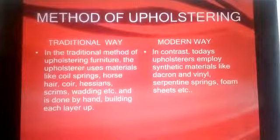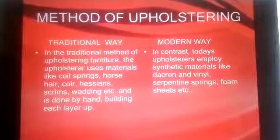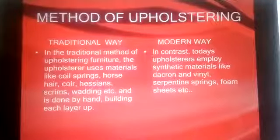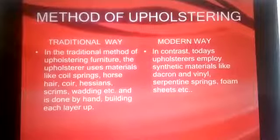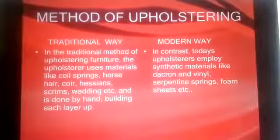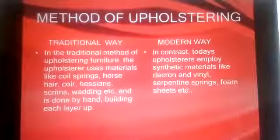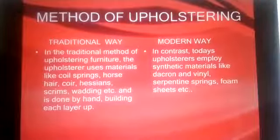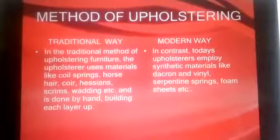Now let's discuss the methods of upholstery. In the traditional method of upholstering furniture, the upholsterer uses materials like coil springs, horsehair, scrims, webbing, and more. The work is done by hand, building up each layer one at a time.